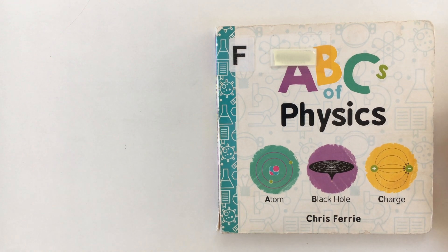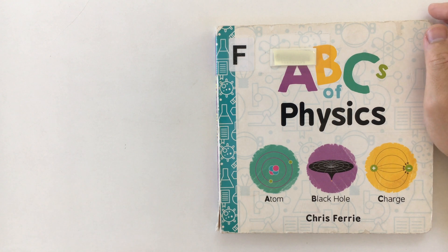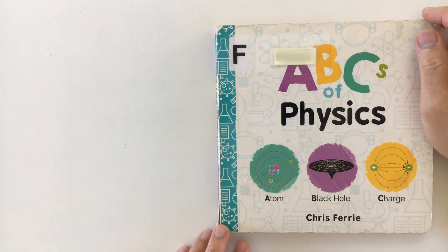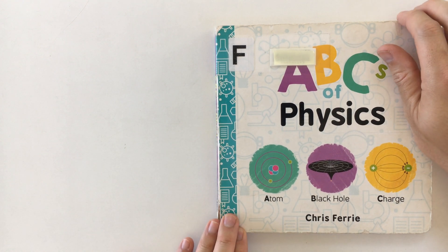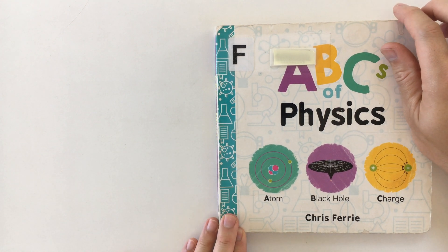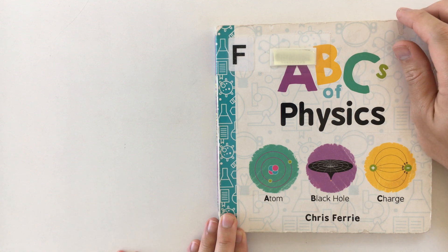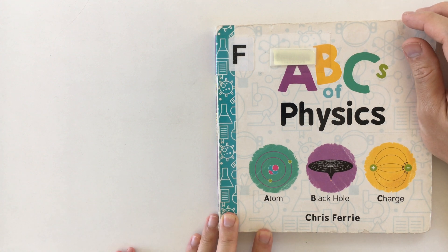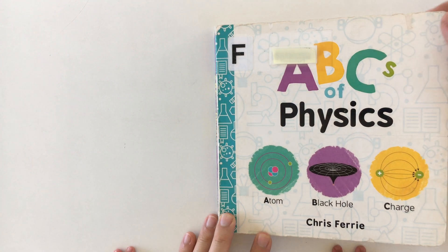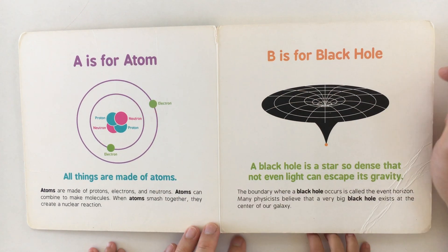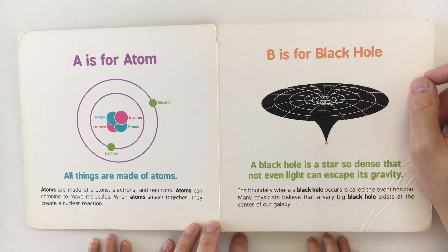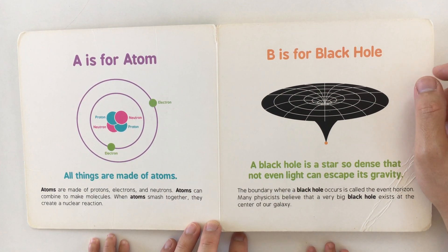Are you ready to learn about the ABCs of physics? Yes, let's do it! This book is called ABCs of Physics and it's written by Chris Ferrie. A is for atom — all things are made of atoms.